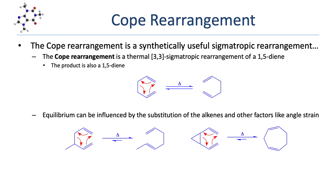We'll wrap things up with a quick look at two particularly common and useful sigmatropic rearrangements. First up is the Cope rearrangement, which is a thermal 3,3-sigmatropic rearrangement of a 1,5-diene. The product of the reaction will also be a 1,5-diene. The simplest possible example is a rather pointless rearrangement of 1,5-hexadiene to give 1,5-hexadiene. In order to see an actual change, we need to decorate the reactant so that it will produce a distinctly different product.